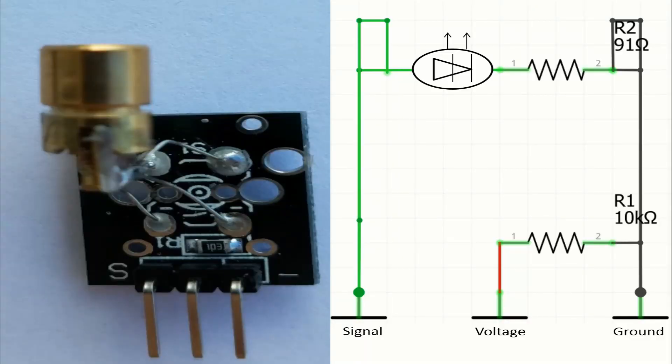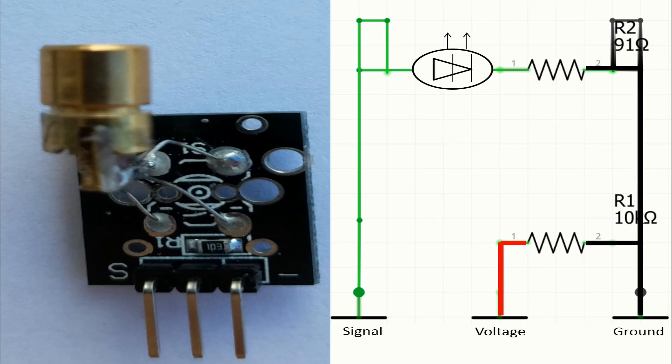Now I will show how these components are connected together. There we have the laser itself and of course the resistor R1 and the resistor R2. On the right you can see how the pins of the module are connected on this board. So we have in red the flow of the voltage, in black the flow of the ground, and of course we have in green the flow of the signal.